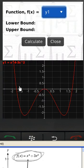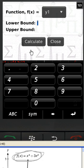And I'm going to say it's between negative 2 and 0. So let me enter in here negative 2 and 0. I click calculate.